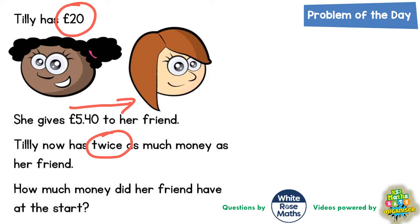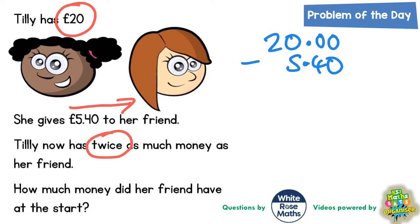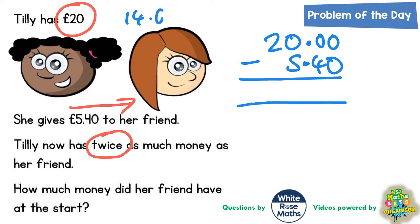Well, the obvious thing to do first is to work out how much money Tilly's got left if she gives away £5.40. So this is going to be £20 subtract £5.40. If you knock off the £5 from £20 you'd be left with £15, and if you knock off the 40p you'd be left with £14.60. So it seems like she has £14.60 left.